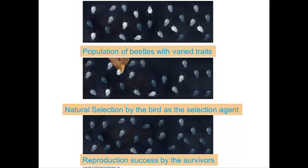Over many generations, an increasing proportion of individuals will have the advantageous traits — in this case, that's going to be the darker bugs. They get to live, so they pass on their genes. The result will be evolutionary adaptation: the accumulation of favorable traits in a population — a group of organisms — not in an individual itself.